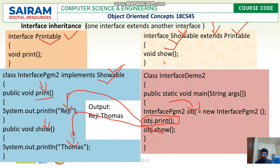When I run the program, I get the output: reji thomas. So we have two interfaces — printable and showable — where showable inherits properties from printable, and a class implementing showable provides implementations for both methods.